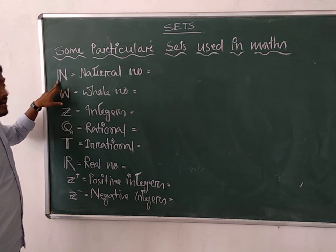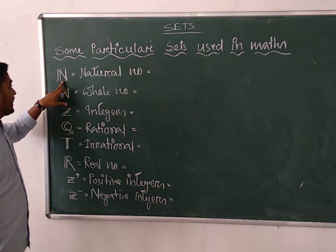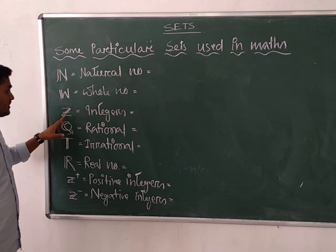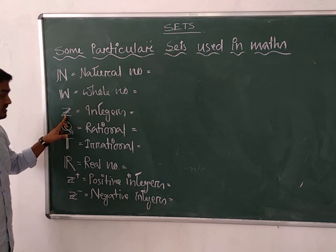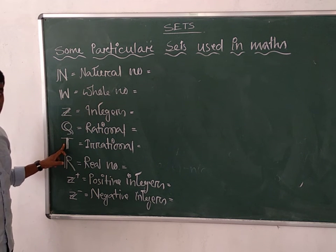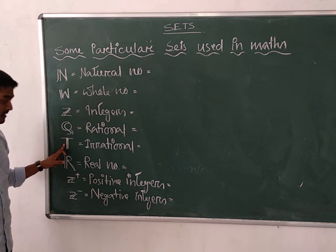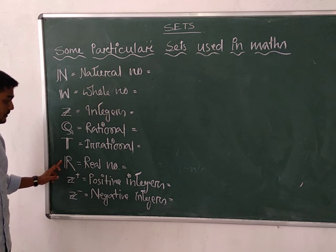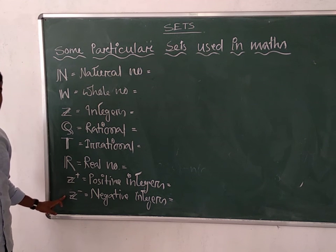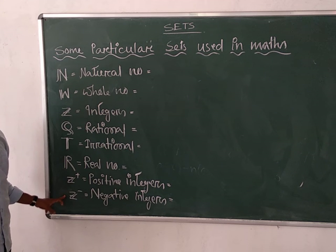This symbol is not just the letter I. This one represents the natural number set. Then we have: whole number set, set of integers, rational numbers, irrational numbers, real number set, positive integers — Z plus — and negative integers, positive rational numbers, negative rational numbers. So many different sets are there.